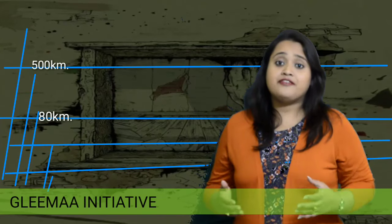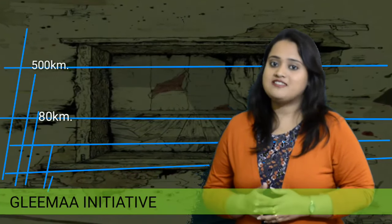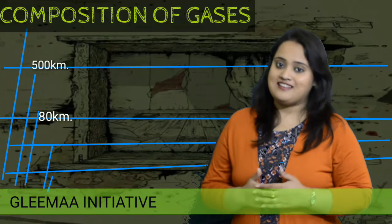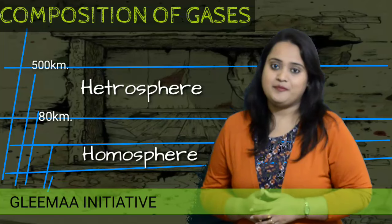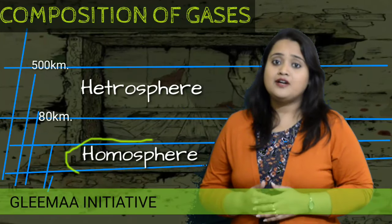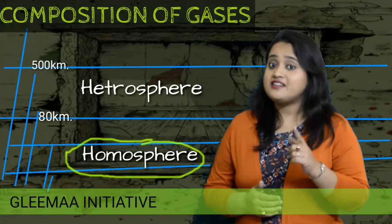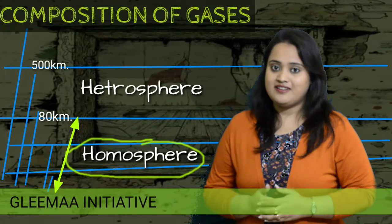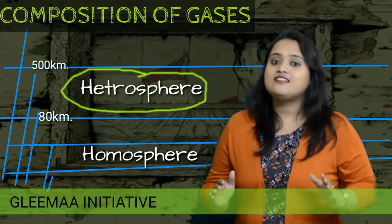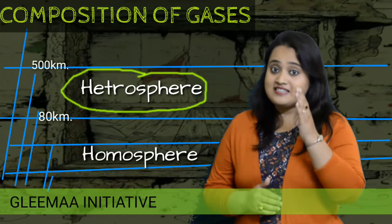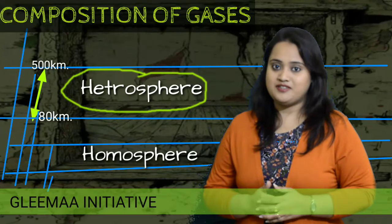Another very important division of Earth's atmosphere is done on the basis of the composition of gases. These are homosphere and heterosphere. Homosphere is the layer where uniformity of gases can be seen and it extends up to 80 kilometers. In the heterosphere, the gases are not evenly mixed and it extends from 80 kilometers to 500 kilometers.